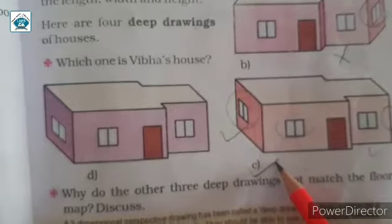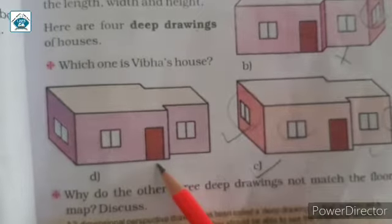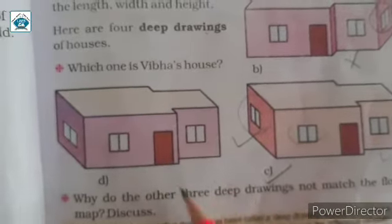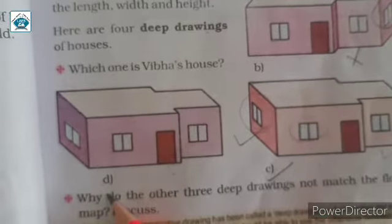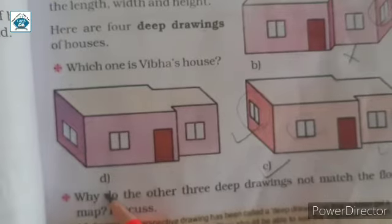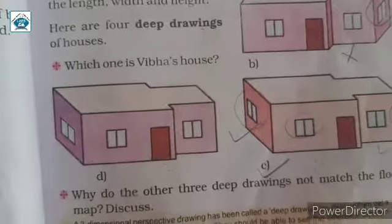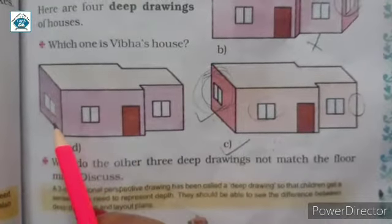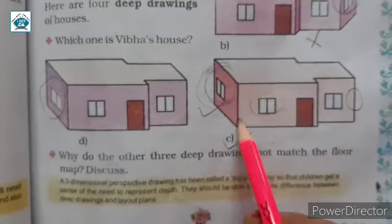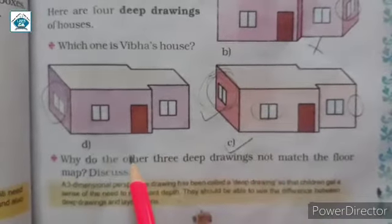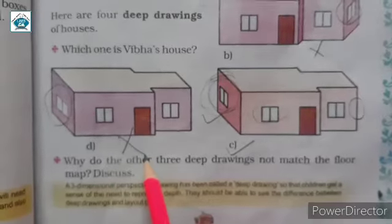But why D is not? Actually there is only one difference between the C and D. What is that? That is just window. You can see here the window is in the middle of its left side. And C the window is not in the middle. So this is the main reason that D is not the correct answer.